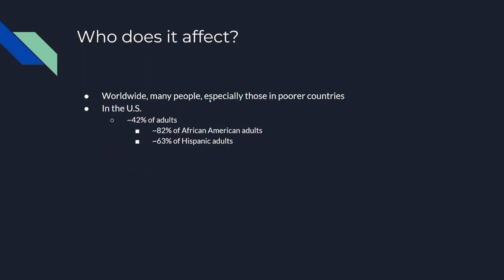So who does it affect? Worldwide, vitamin D deficiency affects many people, especially those in poorer countries in places like Africa, Asia, and the Middle East. However, in the US it affects roughly 42% of adults of all ethnicities, and this number increases with people that have darker skin tones — up to 63% of Hispanic adults and 82% of African American adults.